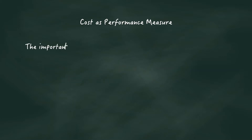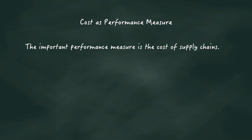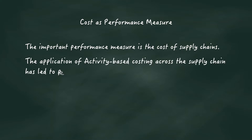The second most important performance measure is the cost of supply chains. The application of activity-based costing across the supply chain by all participants has led to performance and control of supply chains.